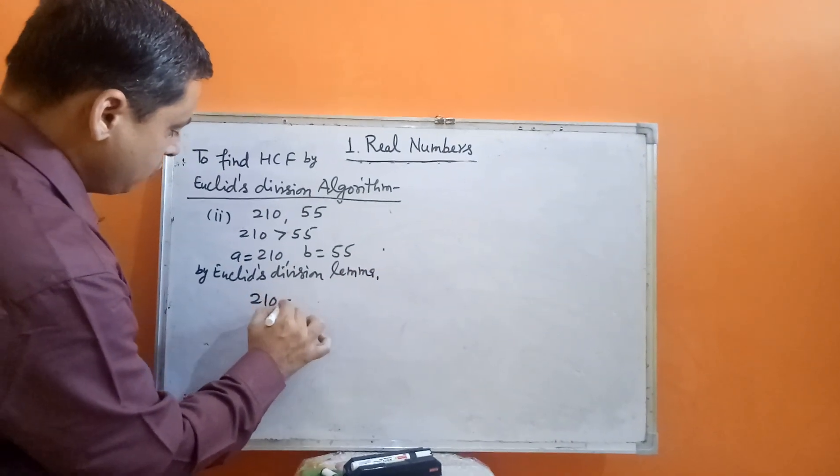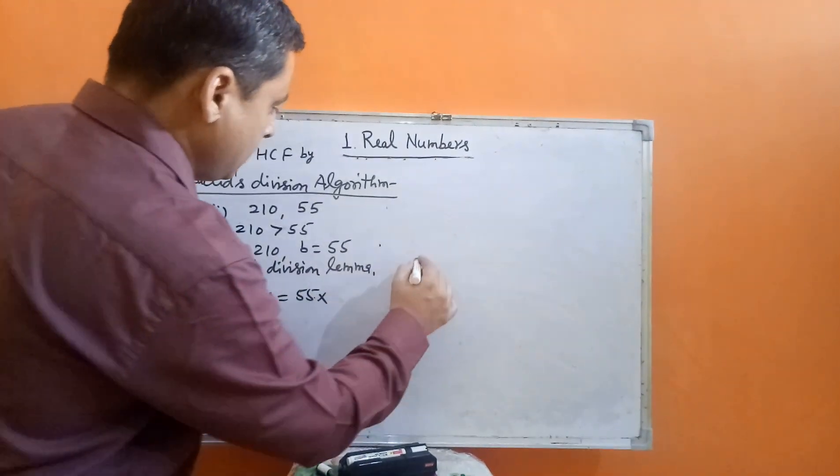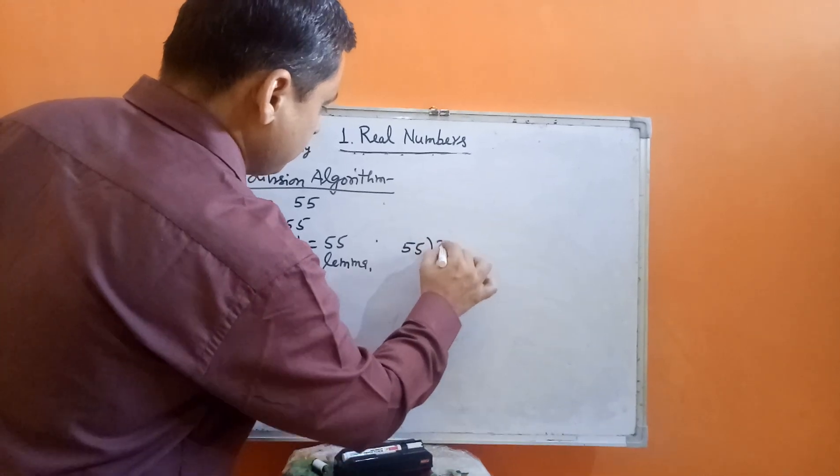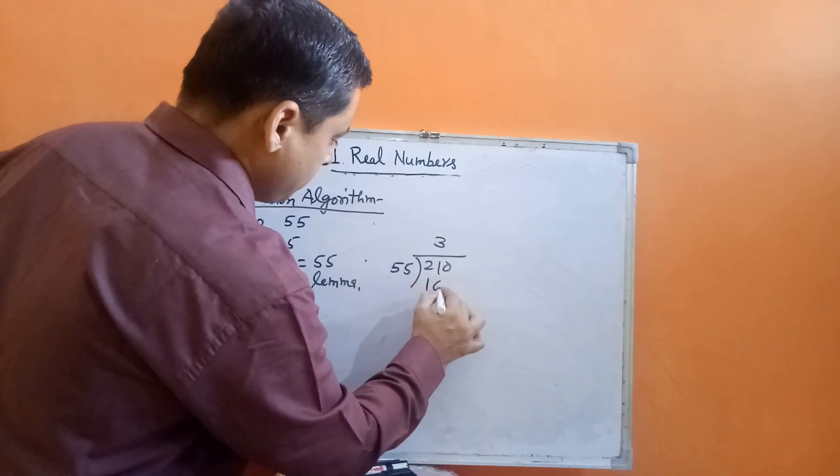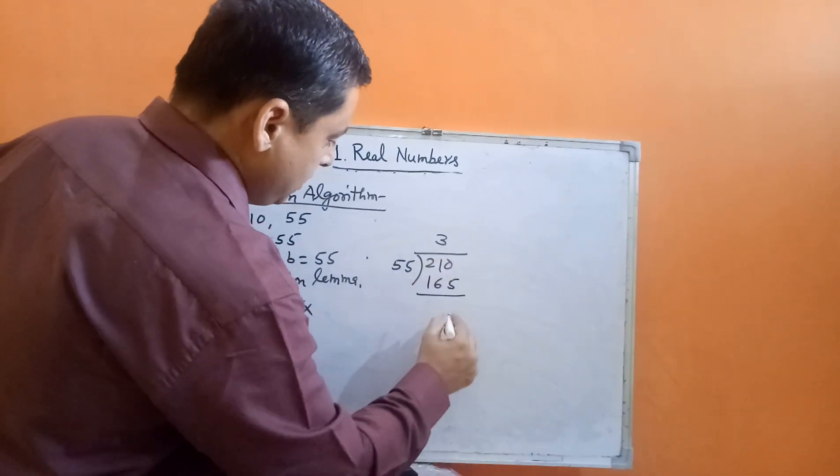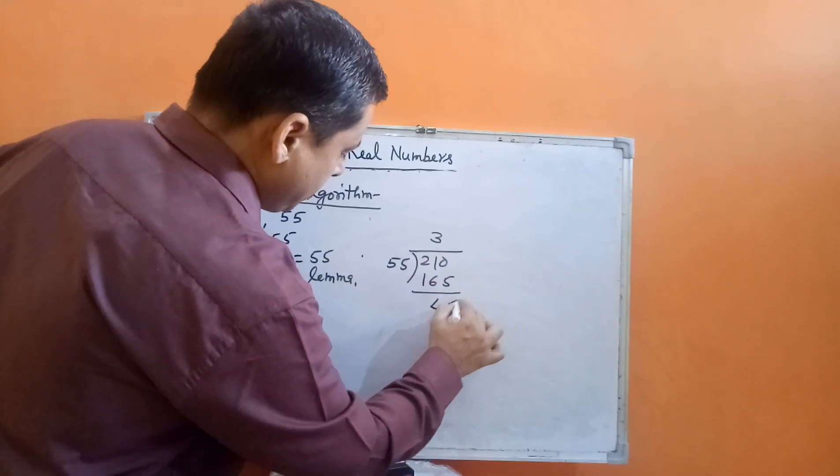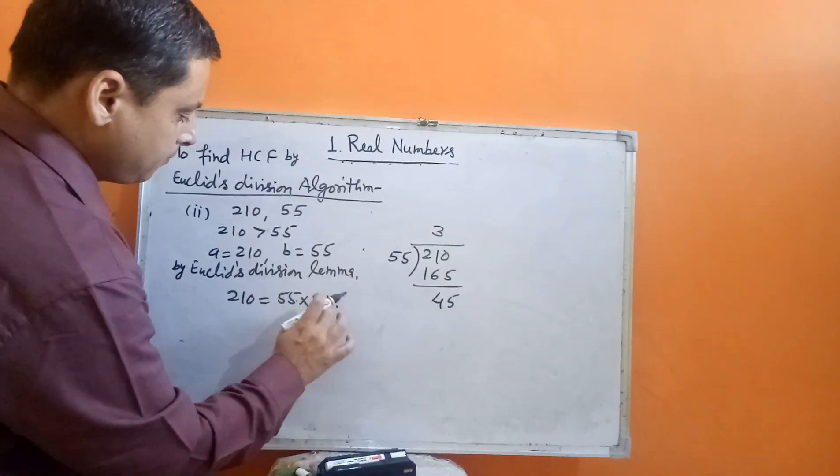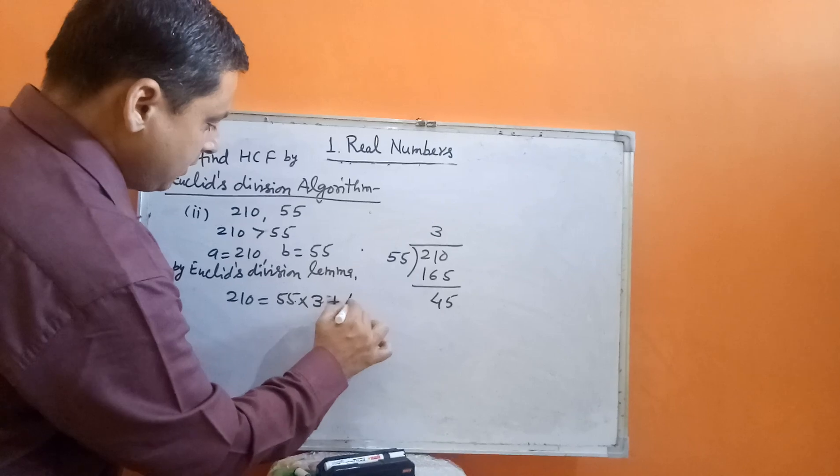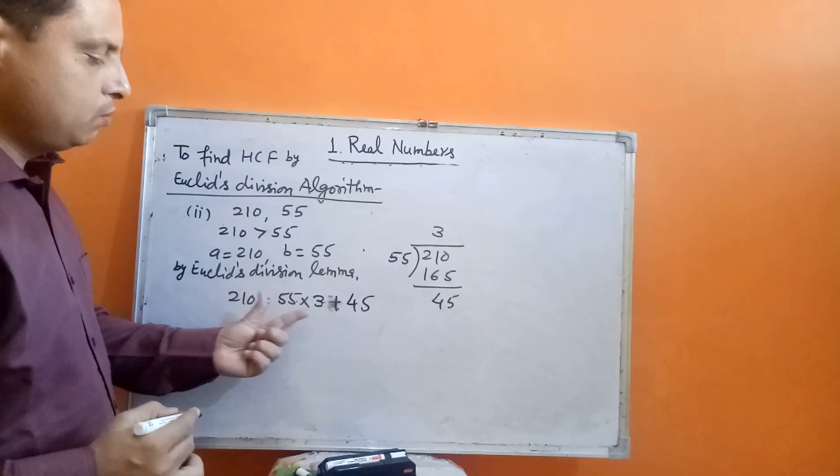By Euclid's division algorithm, 210 equals 55 into... we will divide 210 by 55. This will be 3 times. The remainder will be 45. So, this will be 55 into 3 plus 45. A equals BQ plus R.